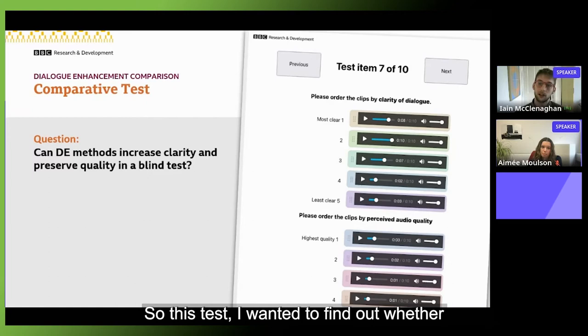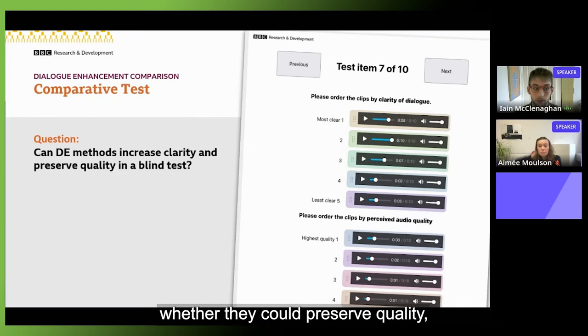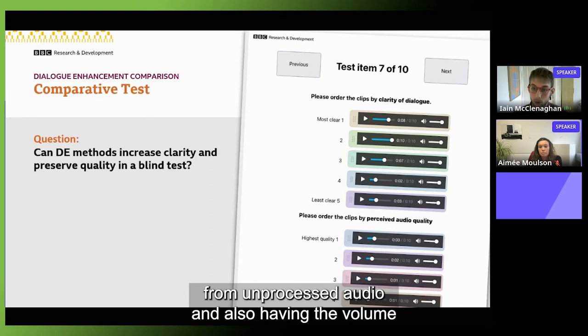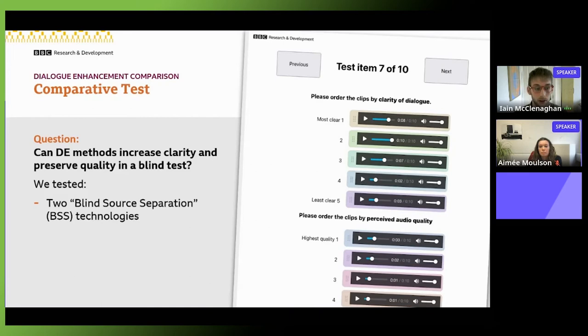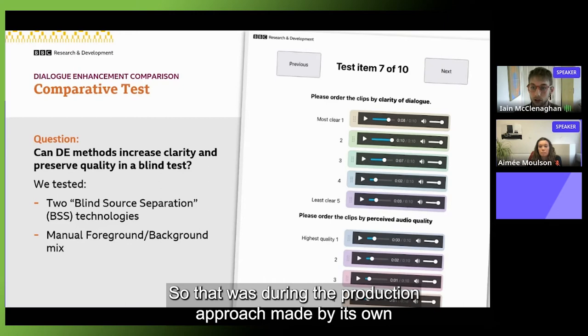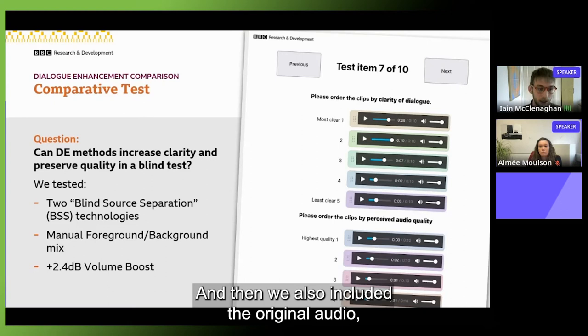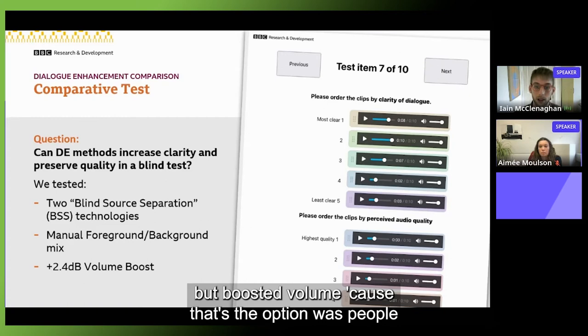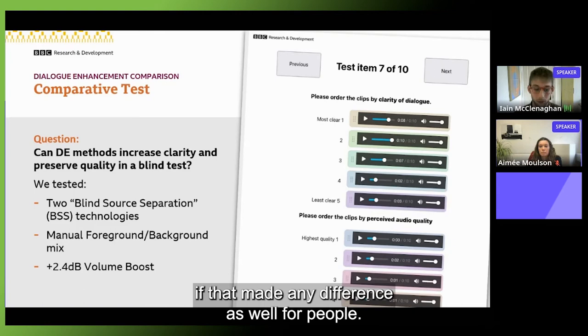Then I put together an initial comparative test where I was trying to establish whether these technologies can be differentiated from a control and what I'm currently working on is an experiment to more directly measure the effect they have on accessibility, and I'll be presenting to you the results of the comparative test. So this test, I wanted to find out whether these technologies could improve clarity, whether they could preserve quality and also whether they were able to be differentiated from unprocessed audio and also having the volume turned up as well.